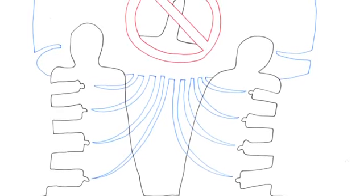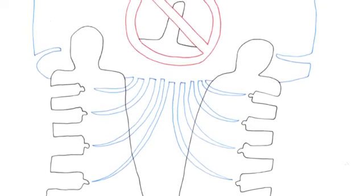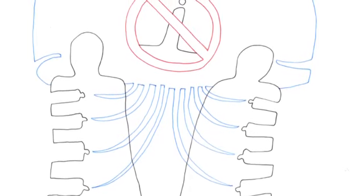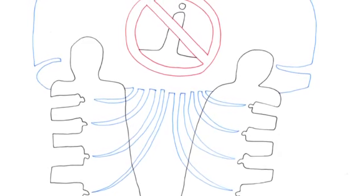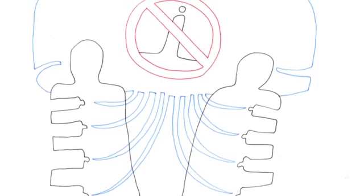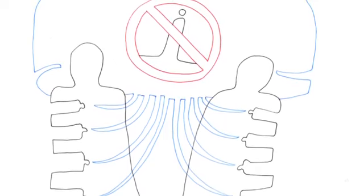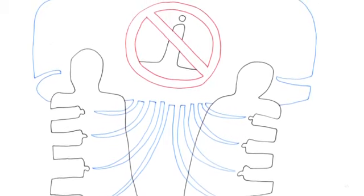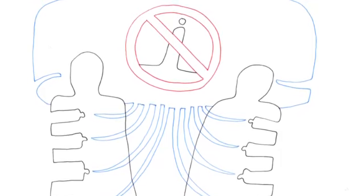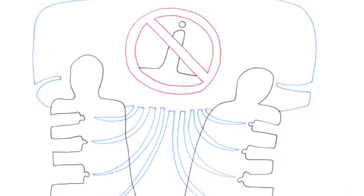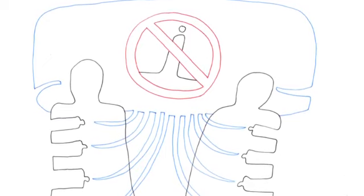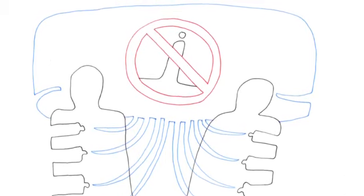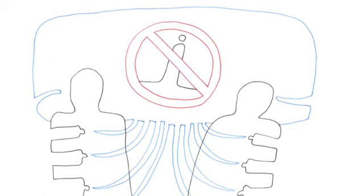One side of a machinic assemblage faces the strata, which doubtless makes it a kind of organism, or signifying totality, or determination attributable to a subject. It also has a side facing a body without organs, which is continually dismantling the organism, causing asignifying particles or pure intensities to pass or circulate.